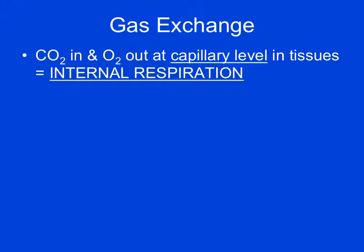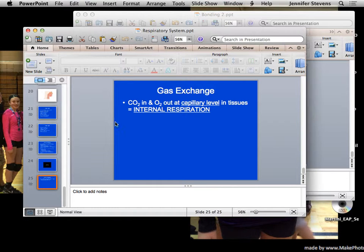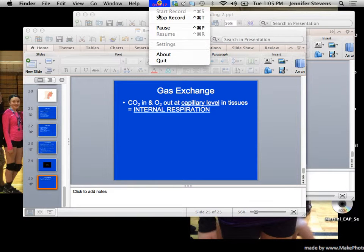At the capillary level, carbon dioxide comes into the blood and oxygen goes out into the tissues — this is referred to as internal respiration. So we have external respiration taking place at the lungs and internal respiration taking place at the body tissues. And don't forget from biology, we also have cellular respiration, which is the exchange of gas between the mitochondria in the cells and the cytosol or cytoplasm that surrounds them.